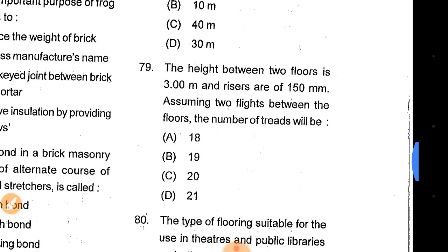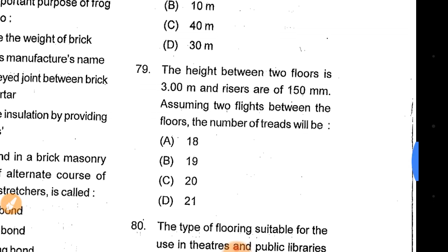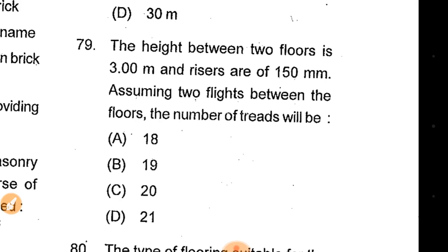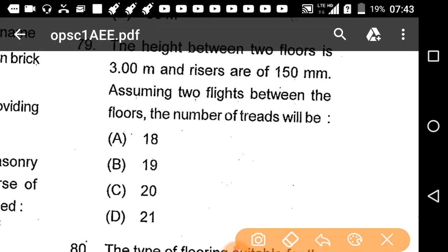Question 79: The height between two floors is 3 metres and the riser is 150 mm, assuming two flights between the floors. Find the number of treads. Given: height = 3 metres, riser = 150 mm.